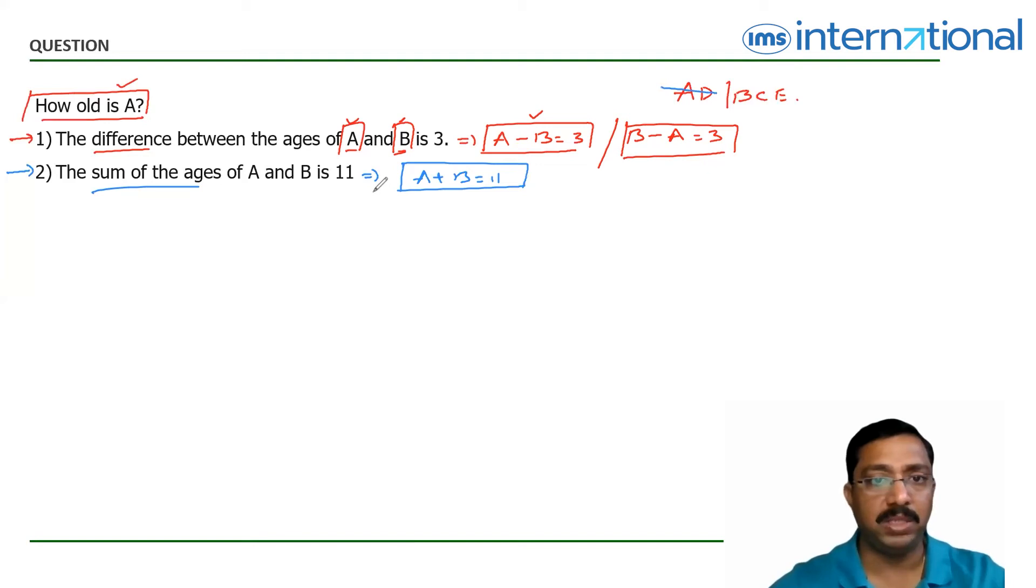Now, this is another linear equation with two variables. You do not have definite values to A and B because it can be 8 plus 3, 11. It can be 6 plus 5, 11. You don't have a definite value to A and B. So is the reason B is gone.